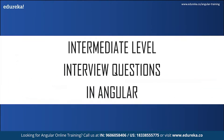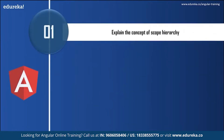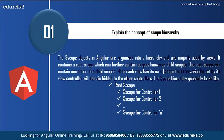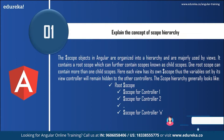With that, we step into intermediate level interview questions. The first is: explain the concept of scope hierarchy. The scope objects in Angular are organized into a hierarchy and are majorly used by views. It contains a root scope which can further contain scopes known as child scopes. One root scope can contain more than one child scope, and each has its own scope. Thus, the variables set by its view controller will remain hidden to other controllers. The scope hierarchy generally looks like the root scope continued by other scope controllers until n number of controllers.